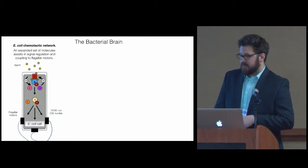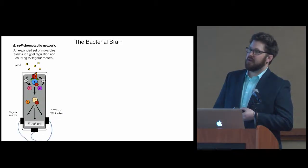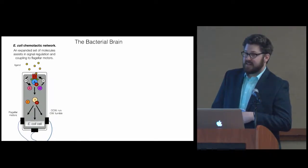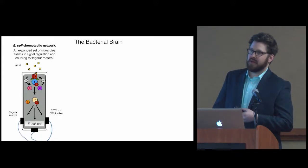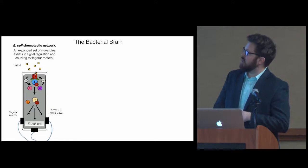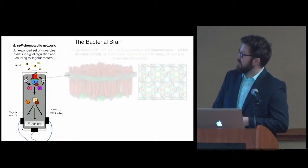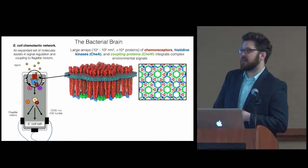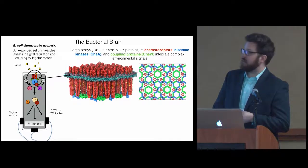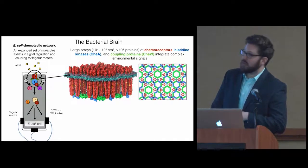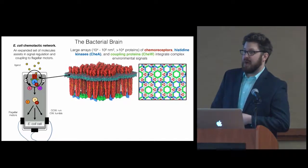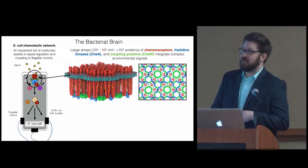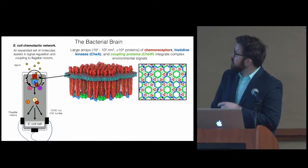So the bacterial brain. How do cells decide whether to run or tumble? This is part of what's controlled by the E. coli chemotactic network. This is an expanded set of molecules which basically help with the signal regulation and the coupling of two macromolecular complexes, the flagellar motor and the chemosensory array, which is the subject of my research. These arrays are really quite large. They contain tens of thousands of proteins, can occupy a significant portion of the cell surface area. What I'm showing on the left here is an atomic model, which we've derived.